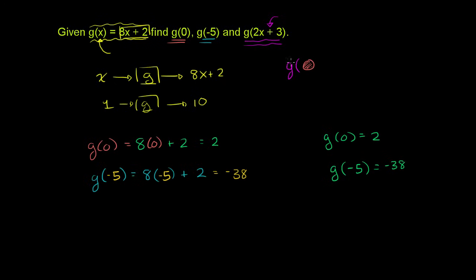...an orange circle right over here, by this function definition, if I'm inputting an orange circle, I should output 8 times the orange circle plus 2. That doesn't make a lot of sense, but hopefully you get the idea that whatever you're inputting, you're just going to multiply it times 8 and add 2. So if we input 2x plus 3, we're going to output this times 8 plus 2 — wherever we see an x, we replace it with this.